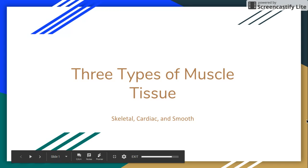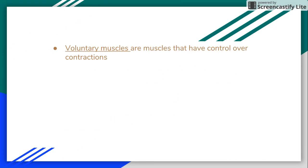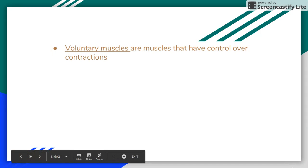The three types of muscle tissue are skeletal, cardiac, and smooth. Voluntary muscles are muscles that have control over contractions.